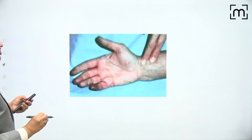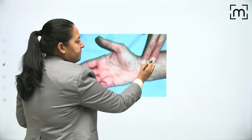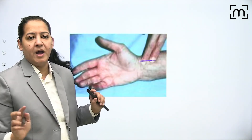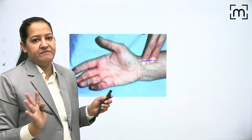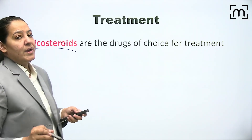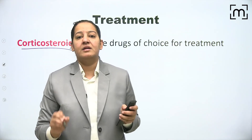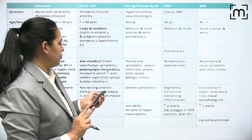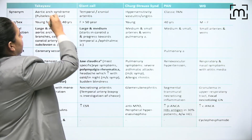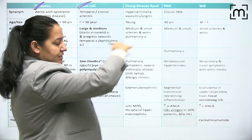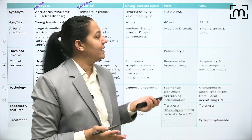Apart from absent pulse, ocular disturbances and claudication can occur. The radial artery pulse at the wrist cannot be palpated. Treatment is the same as temporal arteritis - steroids. So both types of large vessel vasculitis - giant cell arteritis and Takayasu - have been completed. Medium vessel and small vessel vasculitis will be covered in the next session.